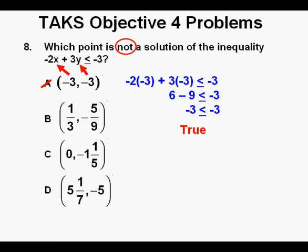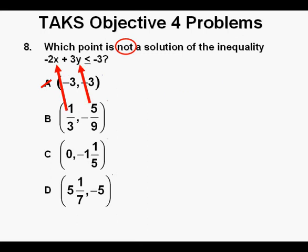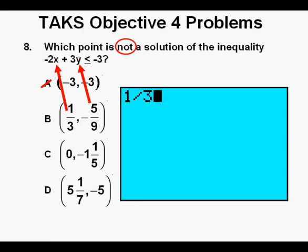Now we go on to answer choice B. We'll be substituting 1 third for X and negative 5 ninths for Y. At this point we'll make use of the calculator. You could do this without a calculator but algebra students are notorious for being intimidated by fractions. We can store the value of 1 third for X by entering 1 divided by 3.